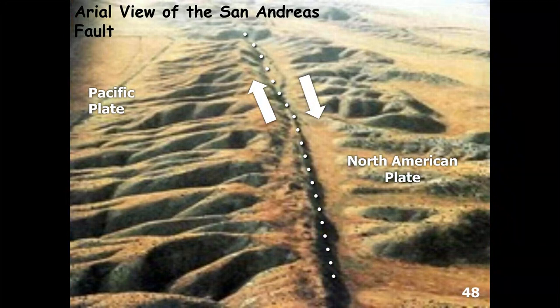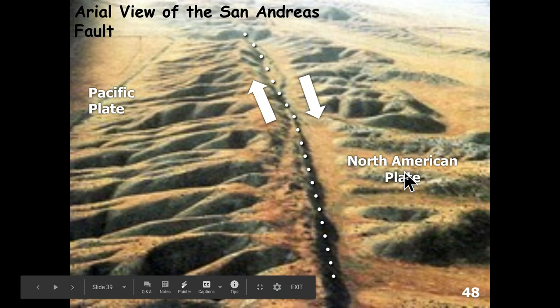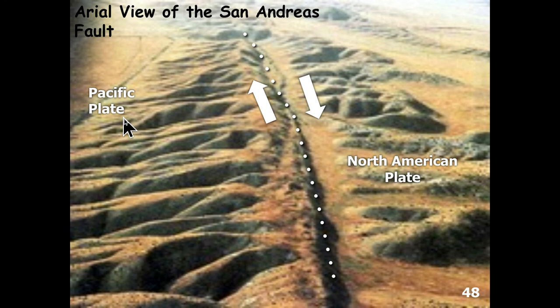An aerial photograph west of Taft, California shows the fault zone of the San Andreas Fault as a clear slice in the landscape, with the North American Plate to the east and the Pacific Plate to the west. If you fly between Los Angeles and San Francisco, the pilots often fly right over the trend of the San Andreas Fault, offering an excellent aerial view.